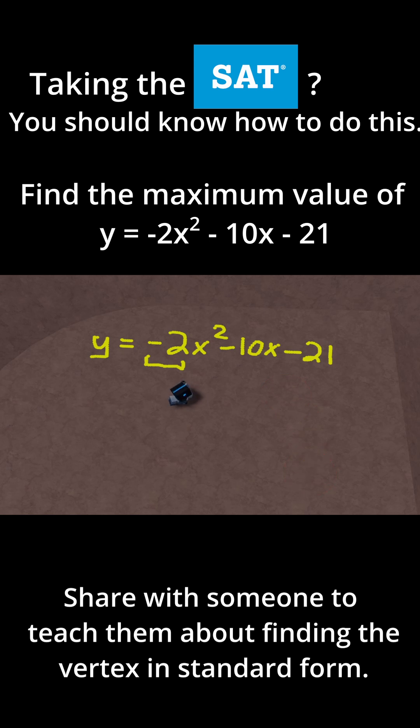To find the vertex, you use -b over 2a. Anytime you have an equation in standard form, our a is -2, our b is -10. So let's apply this formula. -b is -(-10), that is positive 10. And then 2a is 2 times -2, that's -4. And then 10 divided by -4 is -2.5.